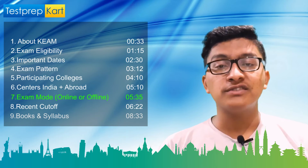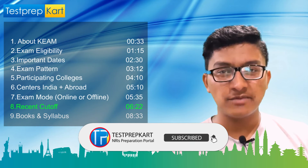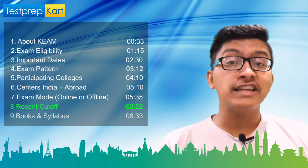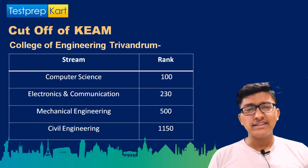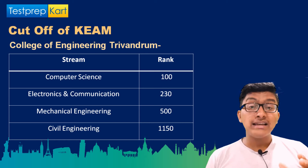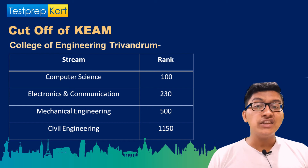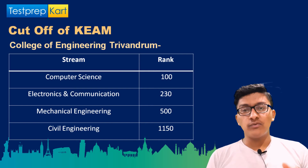Now let's discuss the recent cutoffs for KEAM. For College of Engineering Thiruvananthapuram: Computer Science Engineering requires a rank under 100, Electronics and Communication Engineering under 230, Mechanical Engineering under 520, Civil Engineering under 1150, and Electrical Engineering under 530.